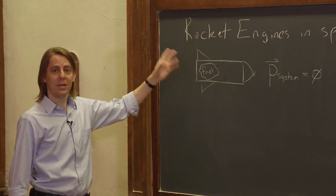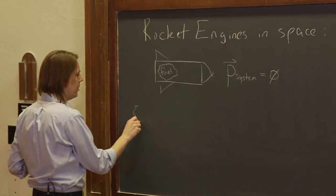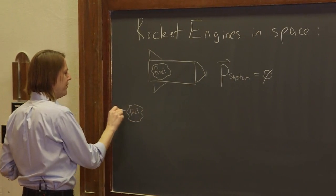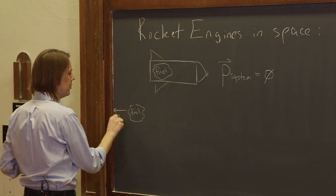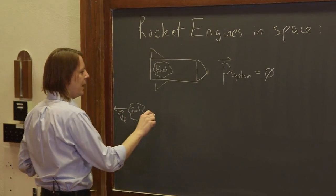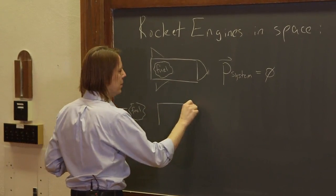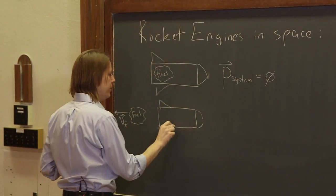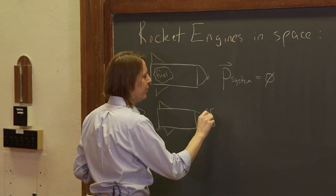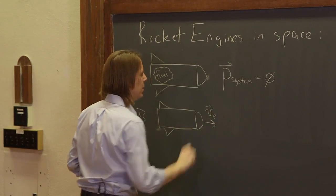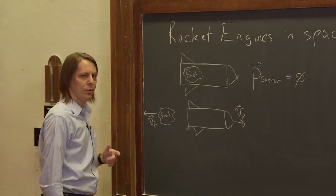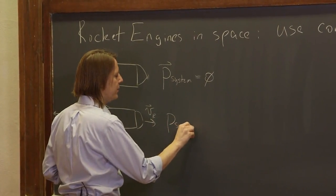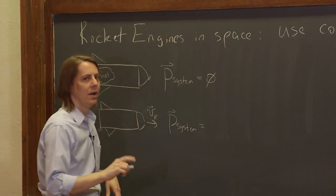You light the fuel, a big chemical explosion happens and the fuel shoots out the back. Here's the fuel. And it's moving very fast at V fuel and therefore the rocket ends up going this way with its fins and everything and it's going at some speed V rocket due to conservation of momentum. The final momentum of the system, in this case, is zero.